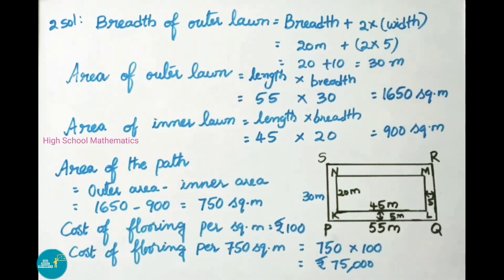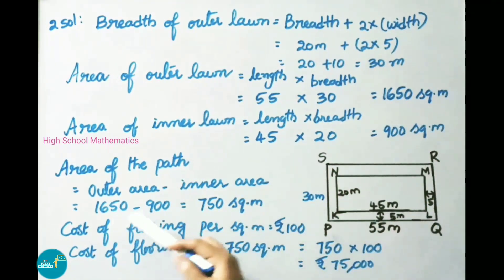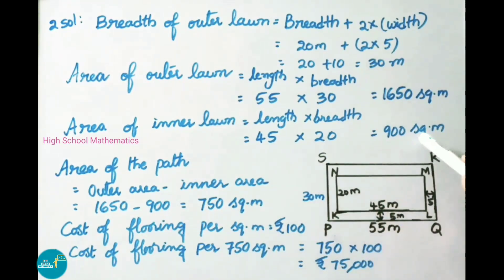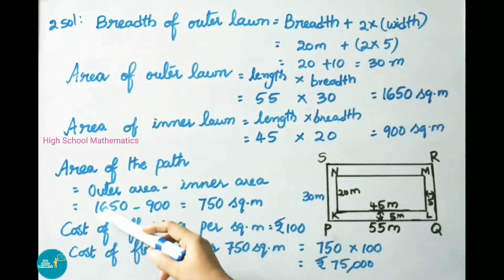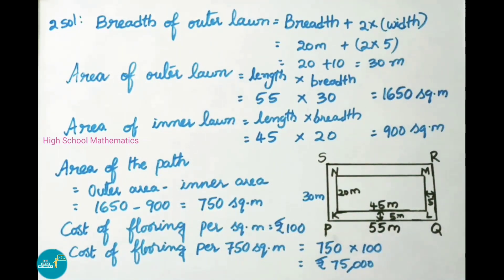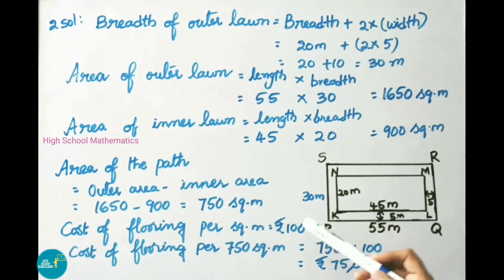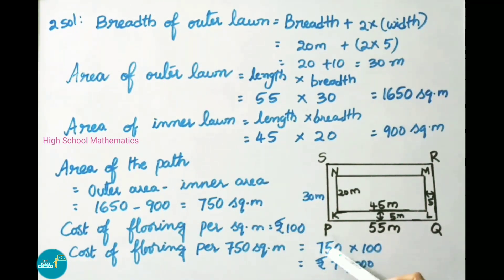Area of the path equals area of outer rectangle minus area of inner rectangle, which is 1650 minus 900, giving 750 square meters. The cost of flooring per square meter is 100 rupees. Therefore cost of flooring for 750 square meters is 750 into 100, which is 75,000 rupees.